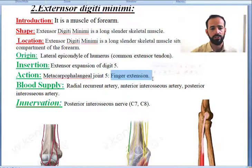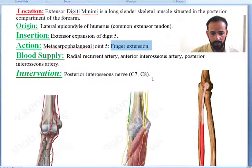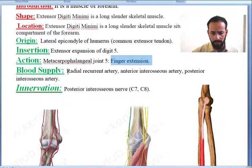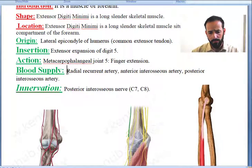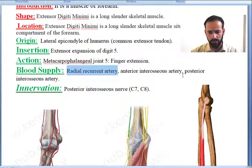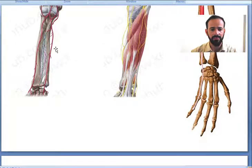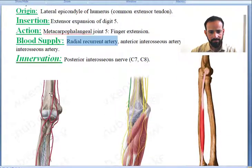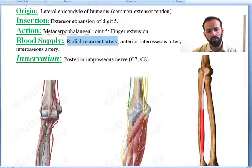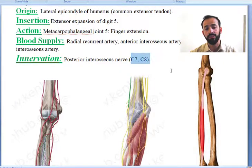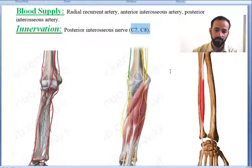The extensor digiti minimi muscle is supplied by oxygenated blood from the radial recurrent artery, anterior interosseous artery, and posterior interosseous arteries — all these help in blood supply. It is innervated by the posterior interosseous nerve.